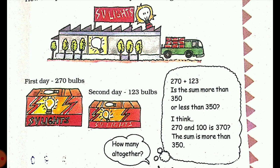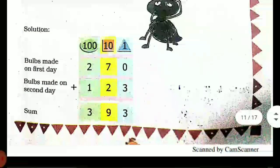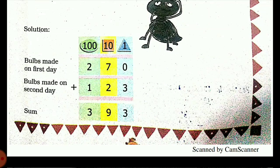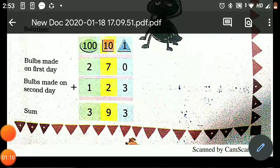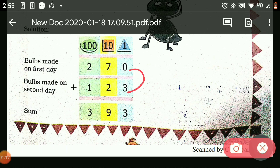So 270 plus 123. Is the sum more than 350 or less than 350? 270 plus 120 is 370, so the sum is more than 350. Let's add: 0 plus 3 is 3, 7 plus 2 is 9, 2 plus 1 is 3. So the answer is 393.